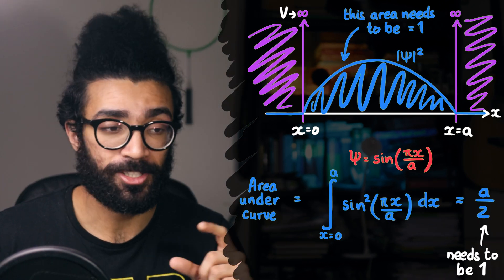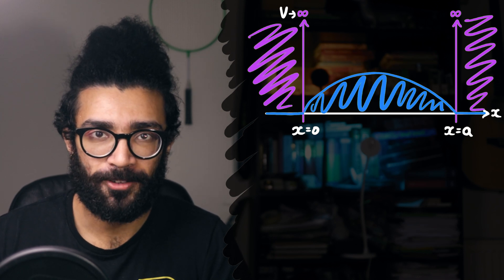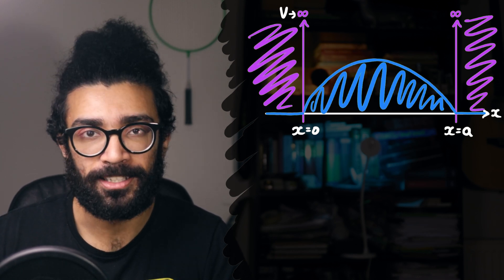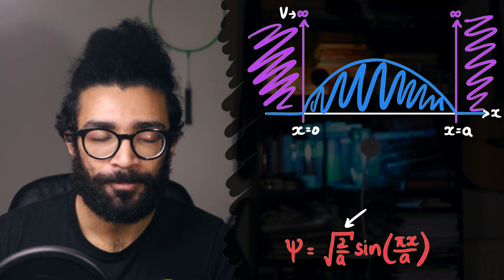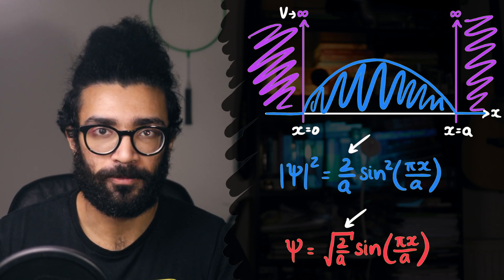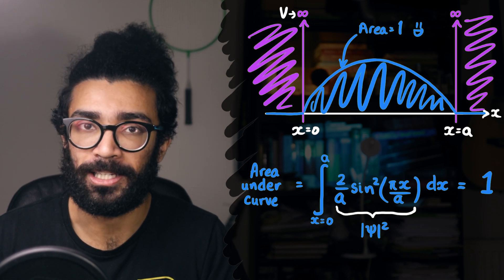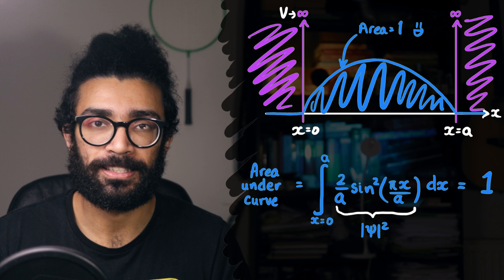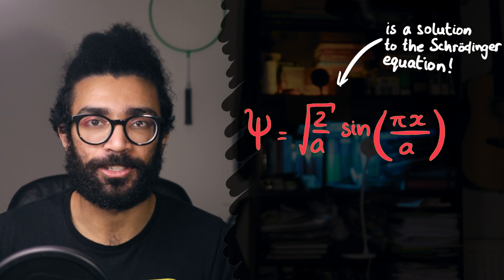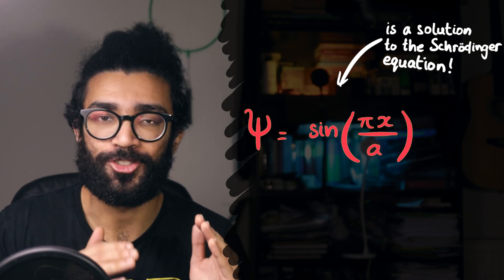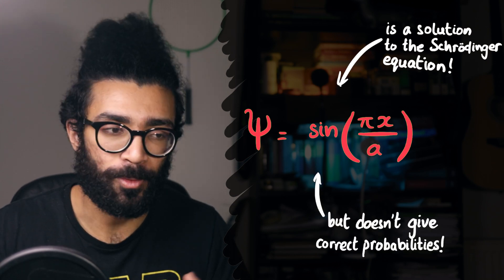So how do we make it equal to 1? The answer is simple. We just stretch or shrink our function as necessary. And the way to stretch or shrink our wave function is by multiplying it by a certain factor. As it turns out, if we multiply the wave function by a factor of square root of 2 over a, then the wave function squared is multiplied by a factor of 2 over a, and therefore the area underneath the wave function squared curve is now going to be equal to 1. And you can also check that this corrected wave function, this stretched wave function, is indeed a solution to the Schrodinger equation. Whereas the original one that we had, just the sine curve, didn't technically work, because it didn't give us the right probabilities when we squared it.